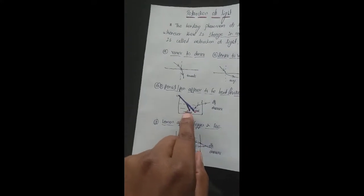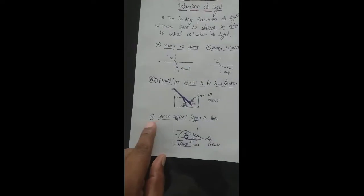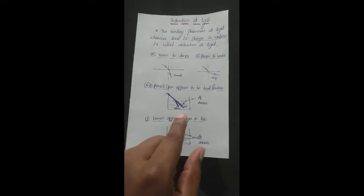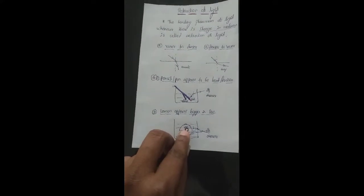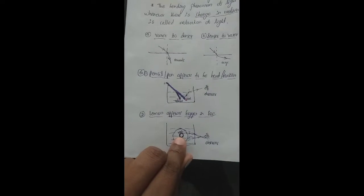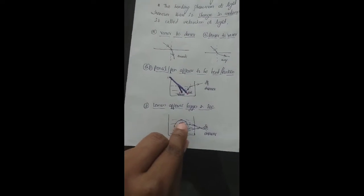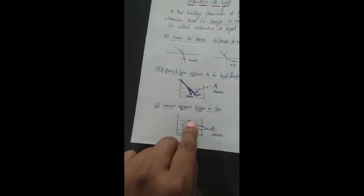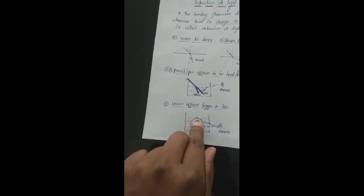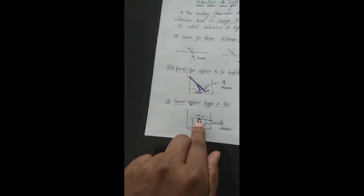Similarly, why does an object in water appear bigger — like the lemon appearing bigger in size? Consider the real position and real size of the lemon. When the light ray moves from denser medium to rarer medium, water to air, it bends away from the normal. So for the observer, the top point appears higher and the bottom part appears lower, making the lemon appear bigger in size.